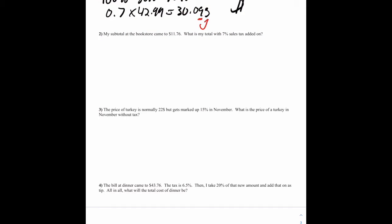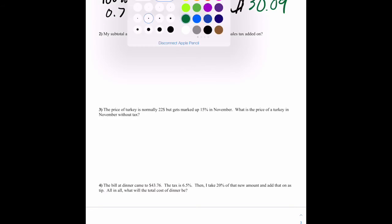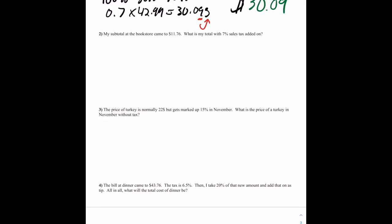So you look at that number, 5 and above, give it a shove, 4 or below, let it go. We're going to let this one go. So the cost will be $30.09. All right, same idea. Next one, doing it the new way.